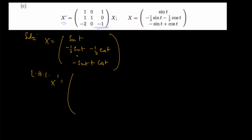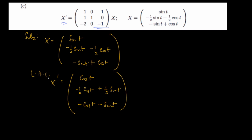The derivative of sine of t is cosine of t. The derivative of the next entry — negative half sine of t minus half cosine of t — gives negative half cosine of t plus half sine of t. And for the last entry, the derivative of negative sine of t plus cosine of t gives negative cosine of t minus sine of t. This is what we have for the left-hand side.